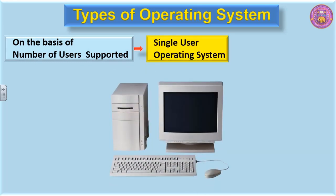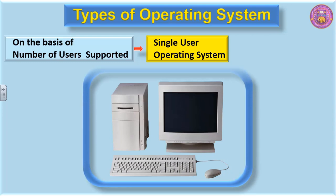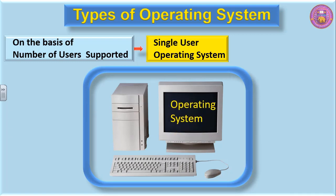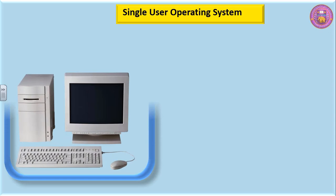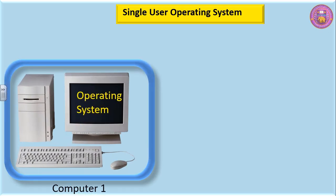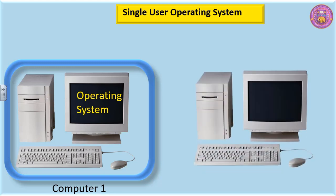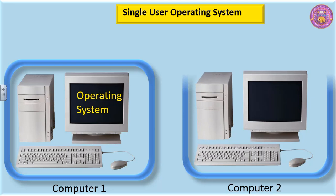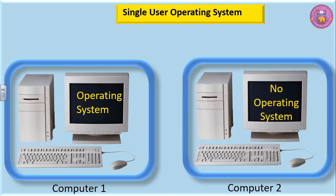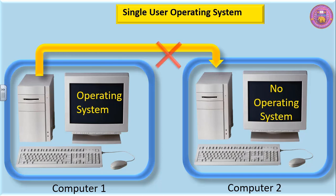On this particular computer, there is one operating system and this computer is not connected to any other computer. It has its own operating system which allows it to function. Computer 1 has an operating system, but computer 2 does not. The operating system of computer 1 will not help computer 2 to operate. So, the operating system which assists only one computer is termed as a single-user operating system.